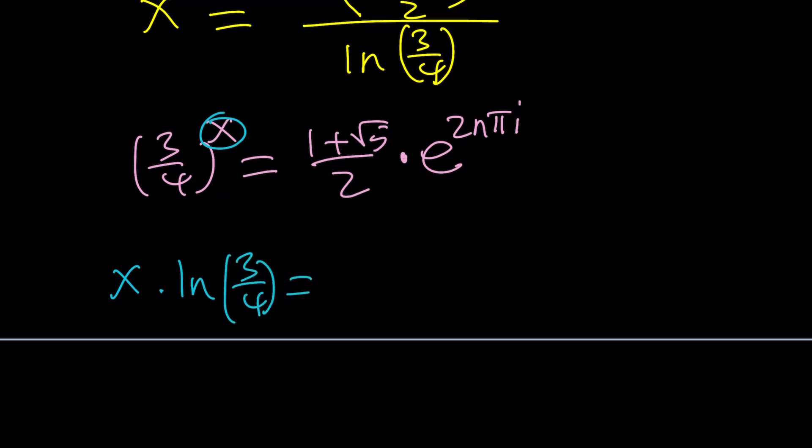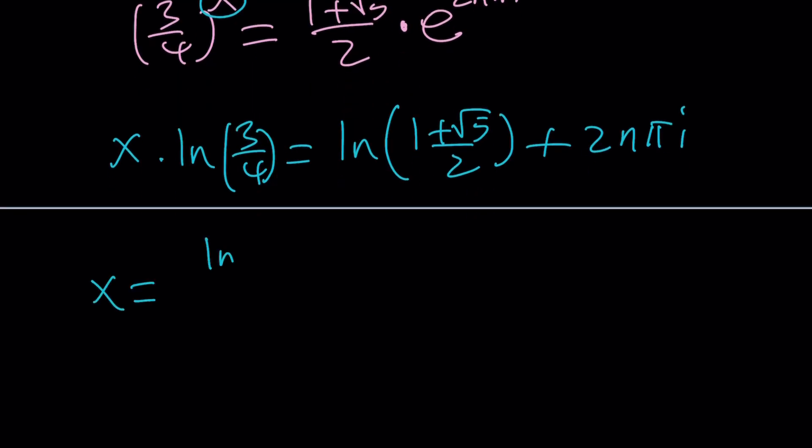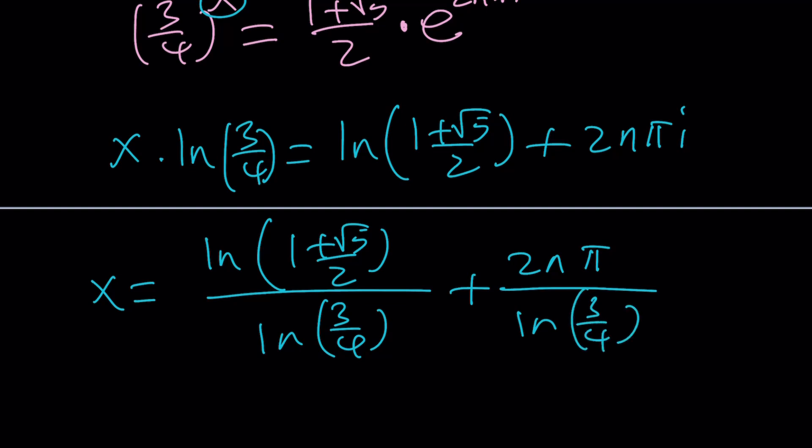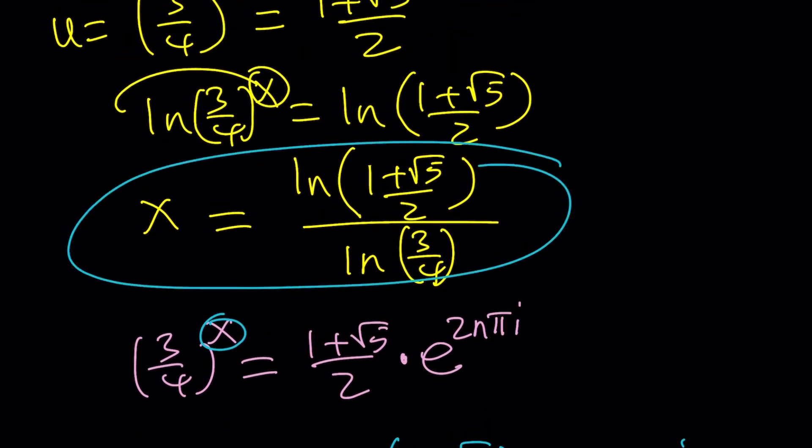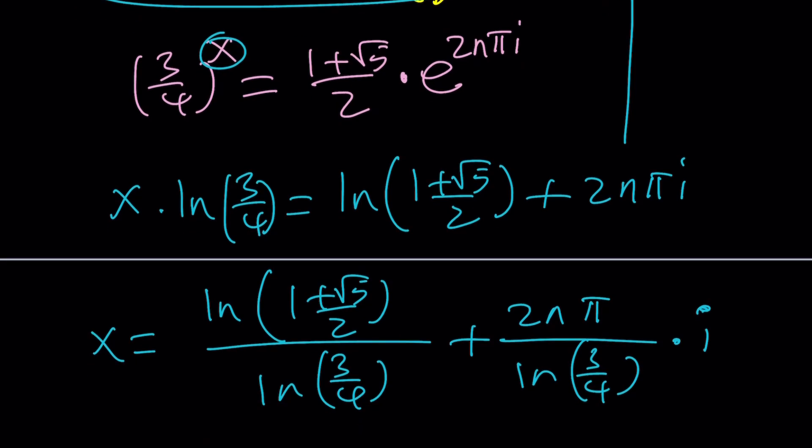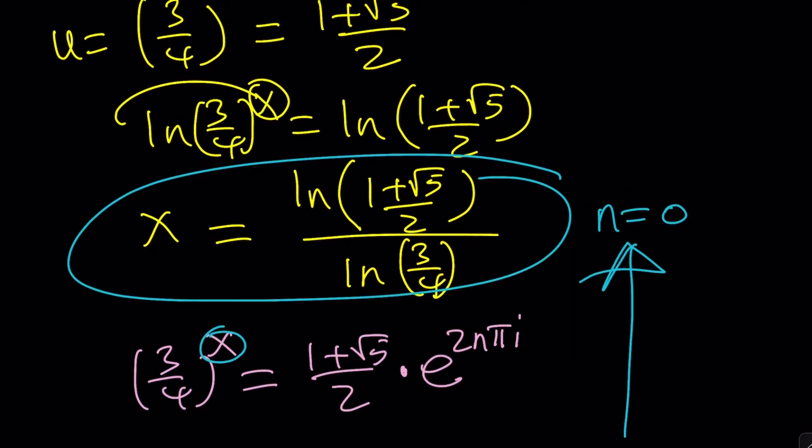ln 1 plus root 5 over 2 plus, because it's the ln of your product, 2n pi i. And, then, finally, when you divide, you're going to get ln 1 plus root 5 over 2 divided by ln 3 fourths. And, of course, there is going to be an additional piece, 2n pi divided by ln 3 over 4. This part is real. Multiply by i. That's going to give you the imaginary part. So, when n is equal to 0, you're going to get this value that's a particular value for n equals 0. Make sense?